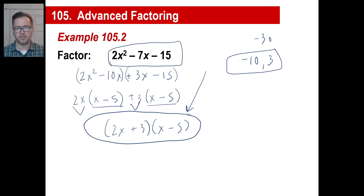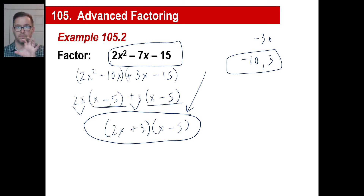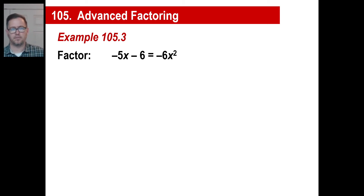Quickly — it's possible you'll come across one where, if you divided by negative 3 for instance, you get x plus 5 but the other group gives x minus 5, and they don't match. Just divide by the negative counterpart to make sure you get the same two binomials.